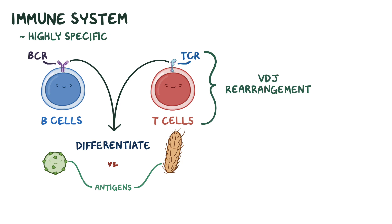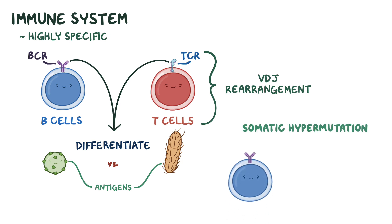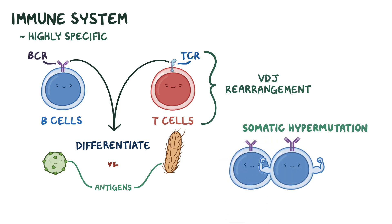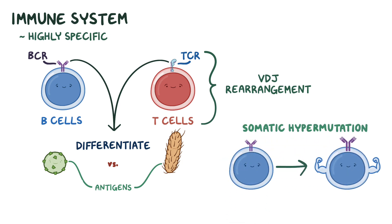B cells can further enhance the diversity of their BCR repertoire using a process called somatic hypermutation, and the result is that the cells that emerge will have a stronger and more specific response to the antigen — this is called affinity maturation.